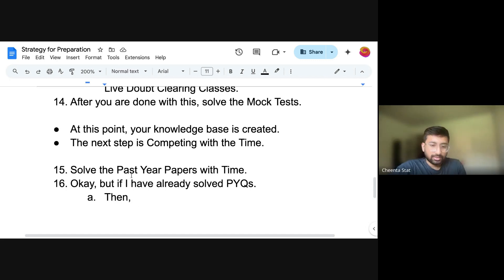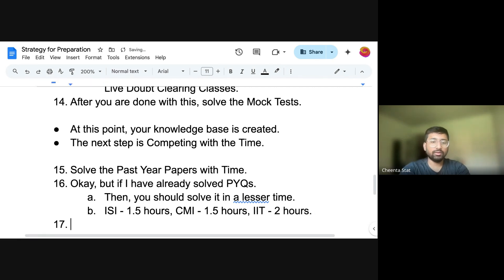So what do you do? If you already solved it, then you should solve it in lesser time. For example, ISI is actually two hours, you solve it under 1.5 hours. CMI is actually two hours, you can again solve it under 1.5 hours. IIT, you can solve it under two hours. That's why we have all our assignment contents in 2022 or 2023. All the others, we have solved it online, but we will not give it in the assignments so that you can practice those as test problems yourself under time. And you can also keep the new 2023 onwards as test problems.